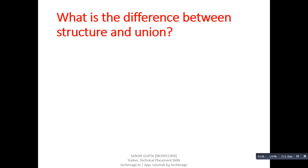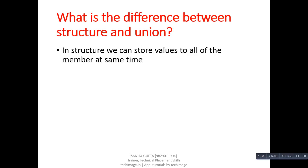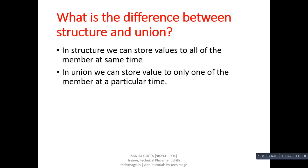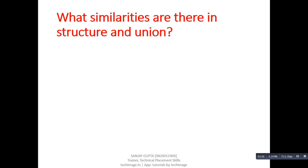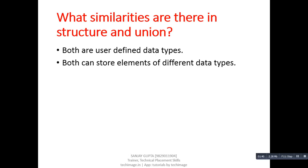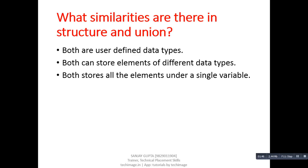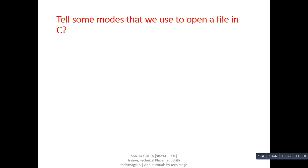Next question: what is the difference between structure and union? In a structure we can store values to all members at the same time, but in case of a union we can store values to only one member at a particular time. Next question: what similarities are there between structure and union? Both are user-defined data types, both can store elements of different types, and both store all elements under a single variable.